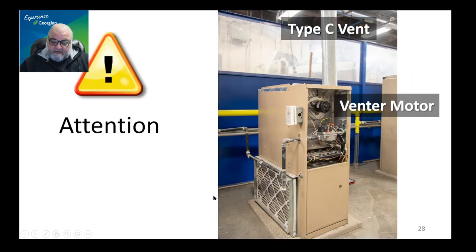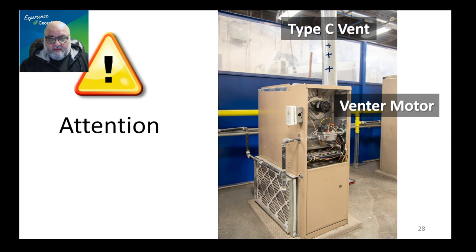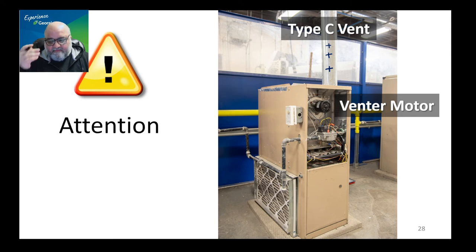Sometimes you're going to see a venter motor attached to a type C vent. The biggest issue with this is that the motor creates positive pressure in the pipe, and type C vent is not airtight or gastight at all. If there is a crack, opening, or seam, the flue gases will be pushed out because of the positive pressure inside. You can easily leak great amounts of flue gases if you do that.